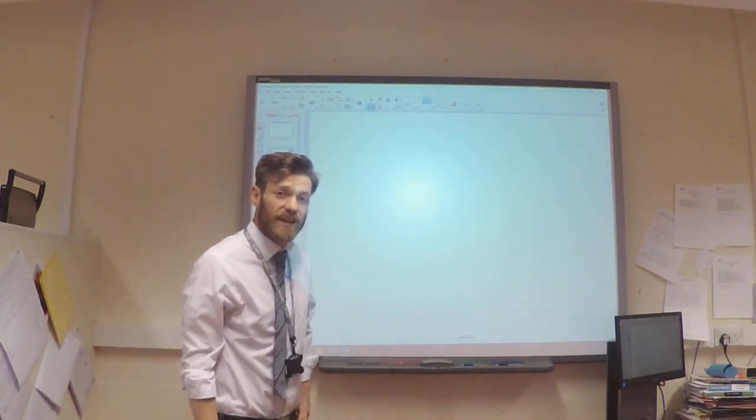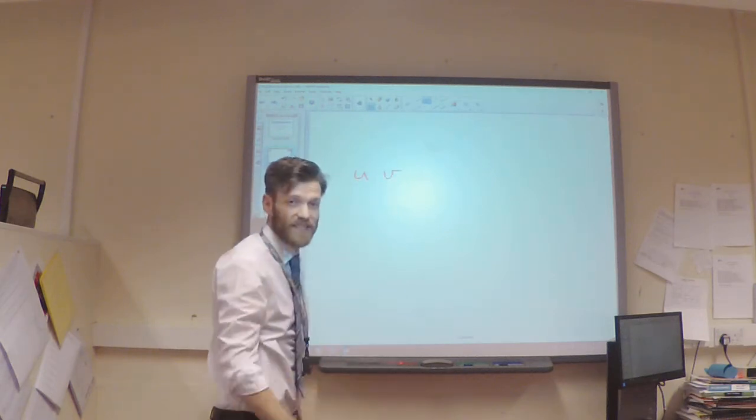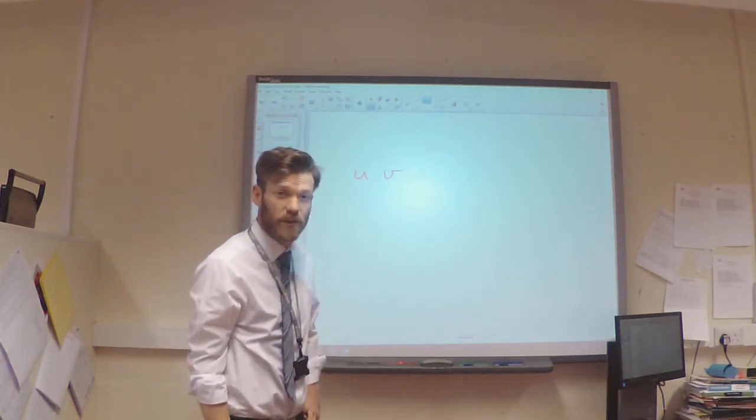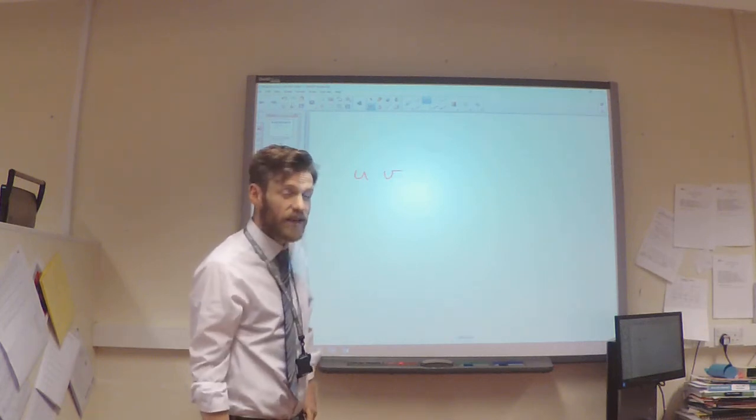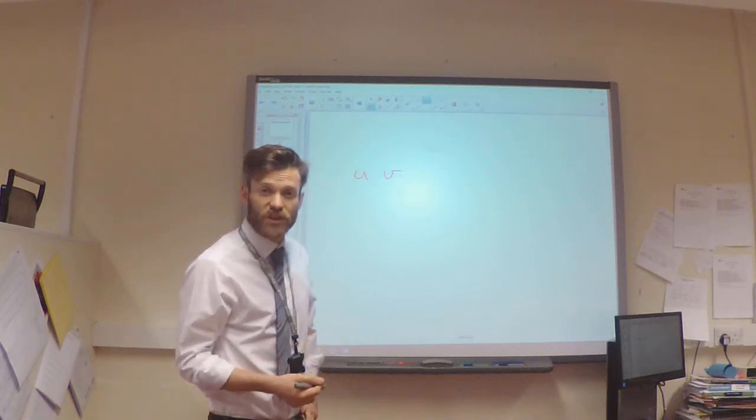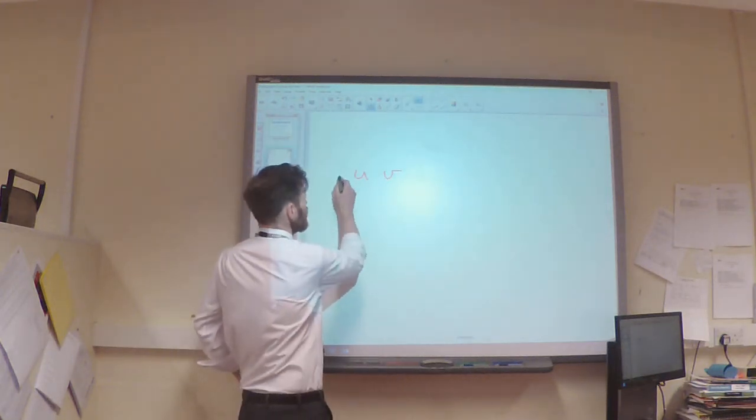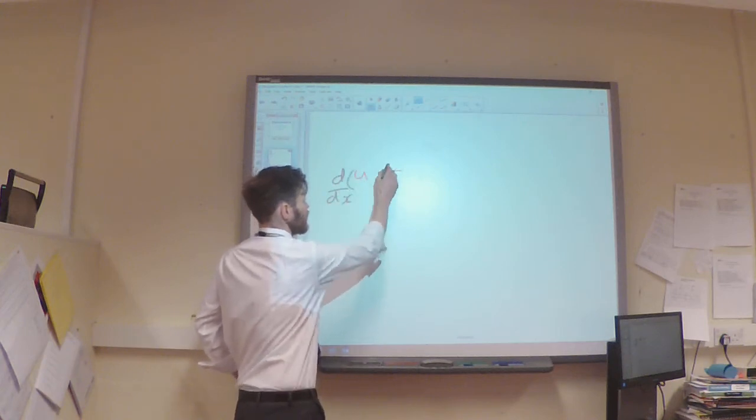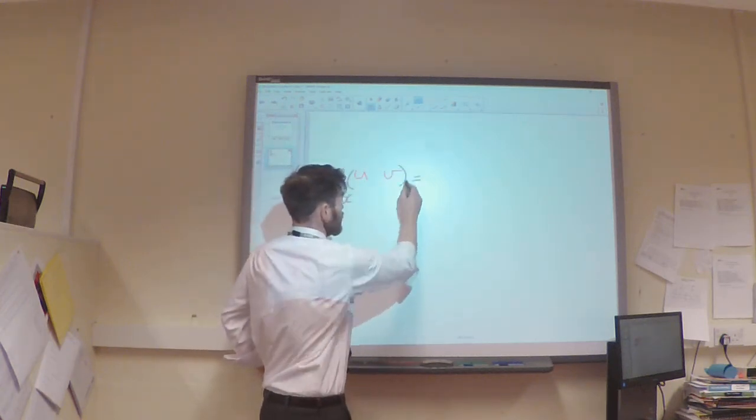I'm going to use the letters u and v to represent our two functions just so we can match up with the notation in the formula sheet. I'm going to use the product rule to differentiate that. When you use the product rule, if I want to differentiate this, I am going to multiply u by the differential of v.